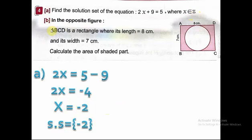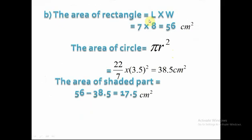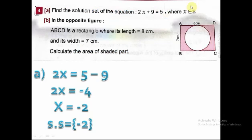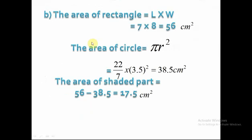Part B: ABCD is a rectangle with length 8 and width 7. Inside the rectangle there is a circle. Calculate the area of the shaded region. I get the area of the whole rectangle first: length × width = 8 × 7 = 56 square centimeters. Then I get the area of the circle inside it.